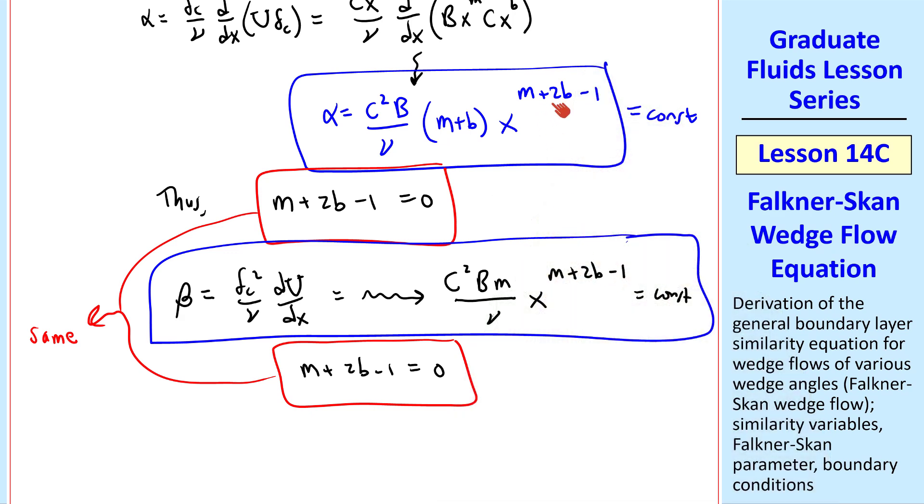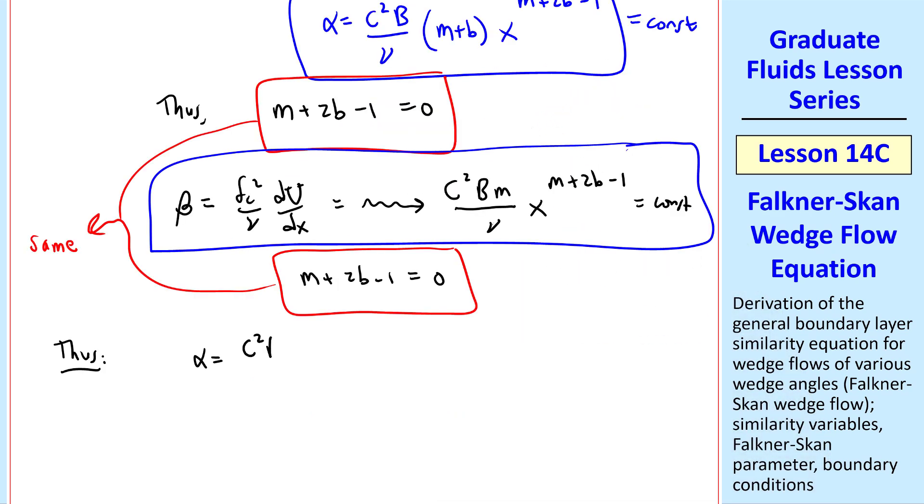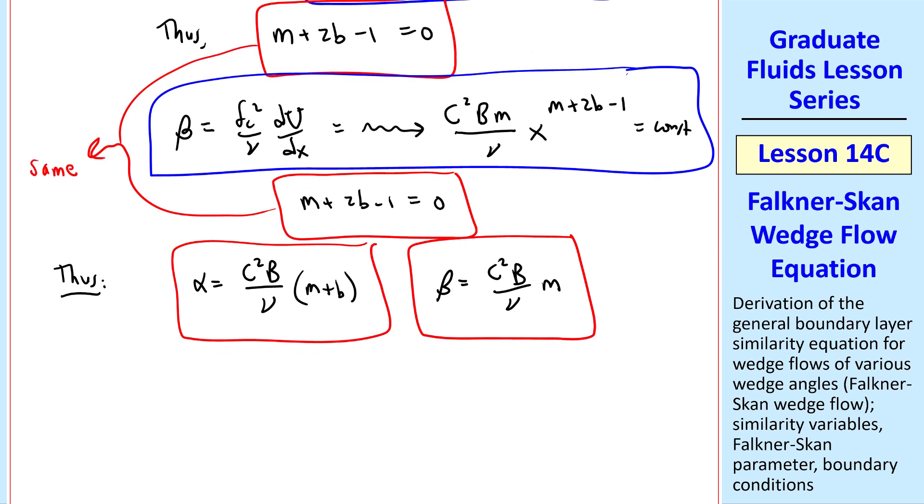Once we set these exponents to 0, alpha becomes c squared B over nu, m plus b, and beta becomes c squared B over nu times m. We'll remember that c, b, little b, and m are all constants. The only restriction being that m plus 2b minus 1 is 0.